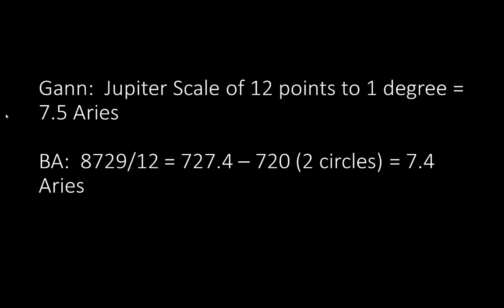This is line three. Gann. Jupiter scale of 12 points to one degree. Notice that Jupiter takes 12 years to make a revolution. And here we got 12 points on the Jupiter scale. To one degree equals 7.5 Aries. B.A. 8,729 divided by 12 equals 727.4 minus 720, which is two circles, which equals 7.4 Aries. Just a little bit off from his 7.5. He's going to start throwing in stuff down the road that makes this even more difficult. We're just warming up.